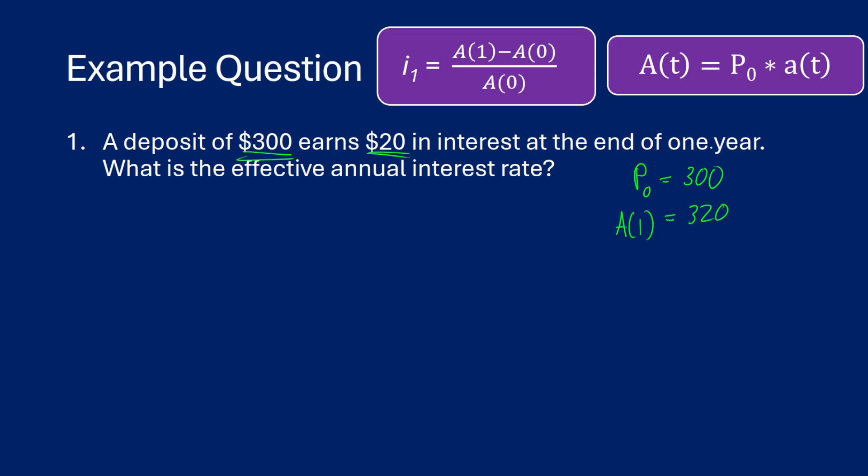So what is the effective annual rate of interest? Well, P0 is really just the same thing as saying A(0) because we haven't actually gained any more money at that point. So i₁, which is after one year, is going to be the amount function at one minus the amount function at zero, all divided by the amount function at zero. So this is going to be $320 minus $300, all divided by $300, which gives us 20 over 300, which if we turn this into a decimal, it's going to be 0.066̄% repeating, which is effectively a 6.67% effective annual interest rate.